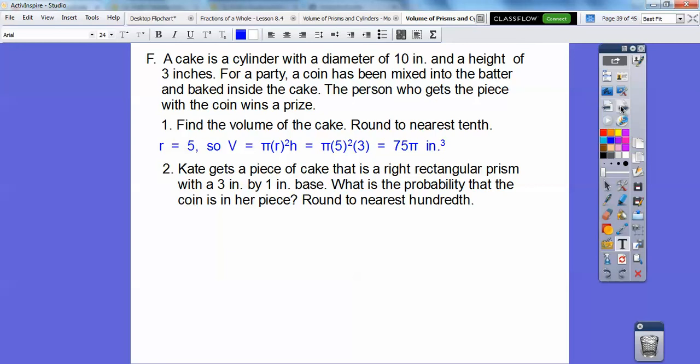So Kate gets a piece of the cake that is a right rectangular prism, which is 3 by 1 on the base right there. And remember, it's 3 feet high right there, so what's the probability that the coin is in that piece right there? So that's approximately equal to 235.6. We'll need that for part 2 right here. So let's find the volume of her piece, so length times width times height, so 3 times 1 times this 3 right here gives us, where am I getting 8 from? Golly, maybe I'm getting these from the textbook right there, but that's 9 right there.